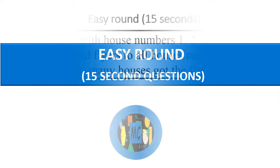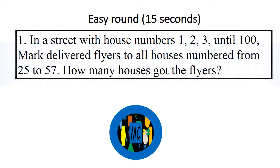Division Orals Grade 1, Easy Round. Question 1: In a street with house numbers 1, 2, 3, until 100, Mark delivered flyers to all houses numbered from 25 to 57. How many houses got the flyers?